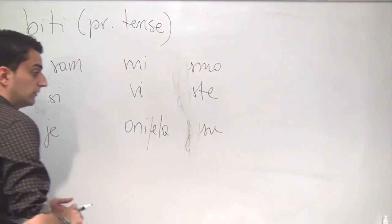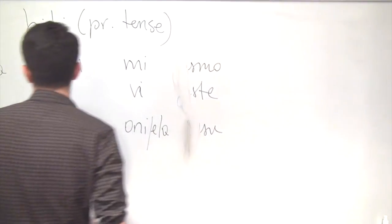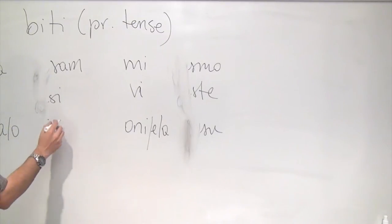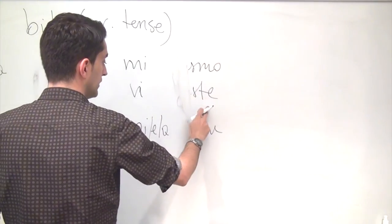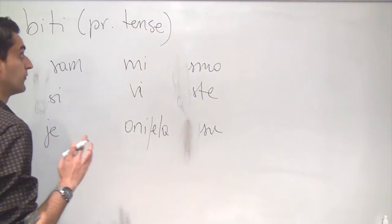And what we'll get is the following: ja sam, ti si, on, ona, ono je. And here you don't get rid of the first syllable, you keep it because there is nothing that follows it. Mi smo, vi ste, and then oni su. So, this is the first building block.